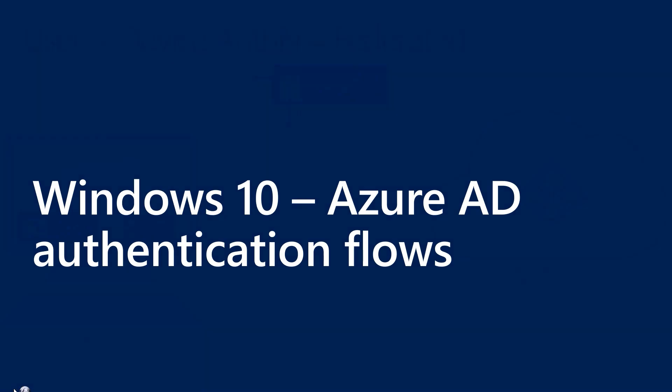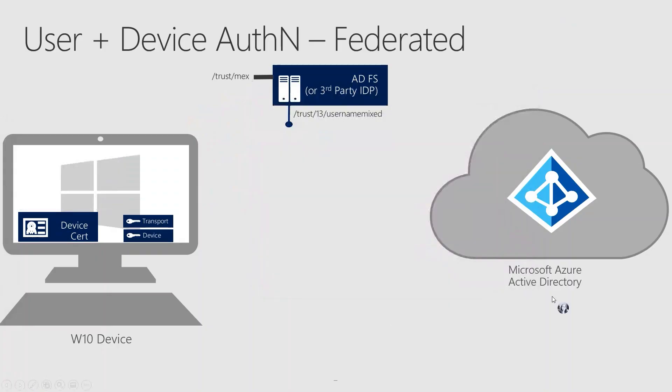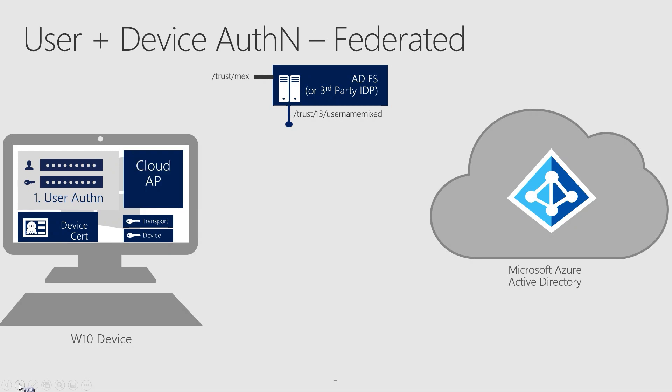Before we dive in, I'd like to call out that the authentication mechanism to an on-premises Active Directory varies based on the credential used, but in this video we'll not be covering that. To recall what we discussed during the device registration videos, in a federated environment, we require the federated identity provider to support the WS-Trust Protocol and enable the relevant endpoints. When a user enters their credentials, Windows Logon passes these credentials to the cloud authentication provider called Cloud AP. Cloud AP uses the user's domain to identify where the user should authenticate — this is referred to as Home Realm Discovery in Azure AD.